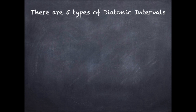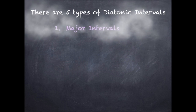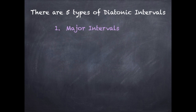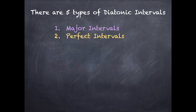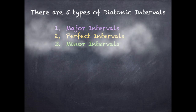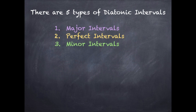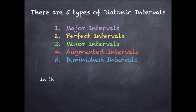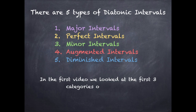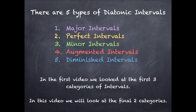There are five types of diatonic intervals: major intervals, perfect intervals, minor intervals, augmented intervals, and diminished intervals. In the first video, we looked at the first three categories of intervals. In this video, we will look at the final two categories of intervals.